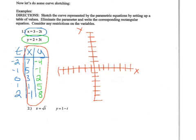I have a point at 7, negative 4. I have a point at 5, negative 1. I have a point at 3, 2. I have a point at 1, 5. And finally a point at negative 1, 8.